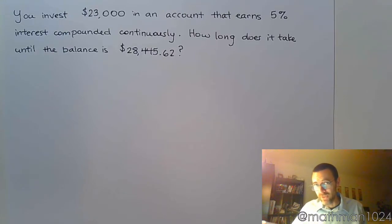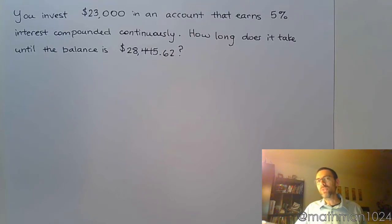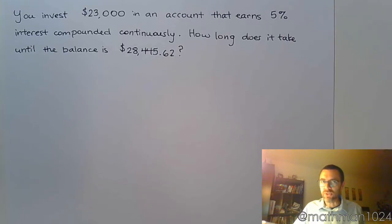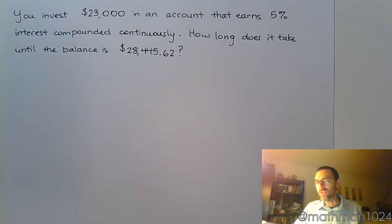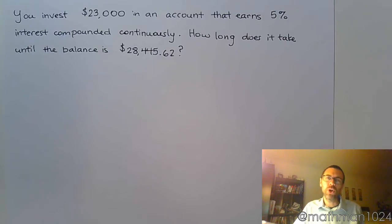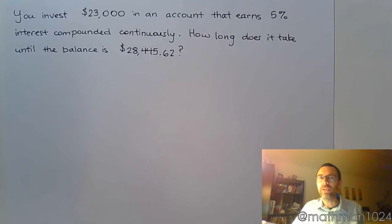You invest $23,000 in an account that earns 5% interest compounded continuously. How long does it take until the balance is $28,445.62?